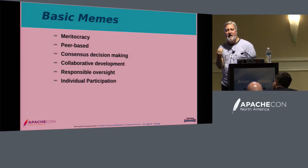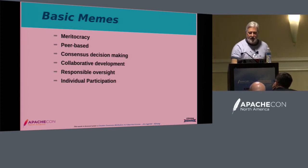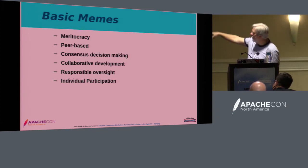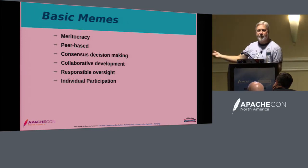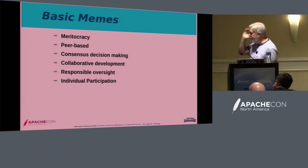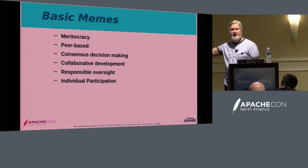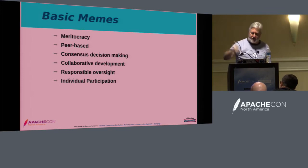Most of the basic things that comprise the Apache Way come from that era, from the mindset of creating a project and a community that is long-term, healthy, and sustainable. Everything else is just how you do that. Some of the basic principles include meritocracy, peer-based responsible oversight, and things like that — and you can see how they fit with the origin of the ASF.